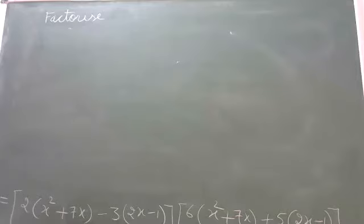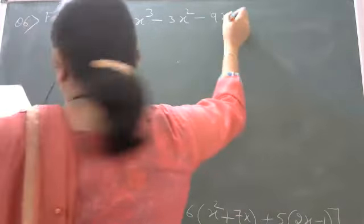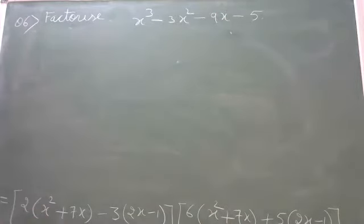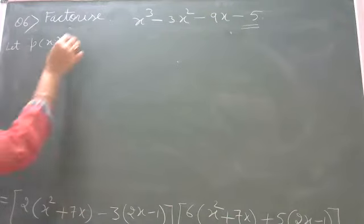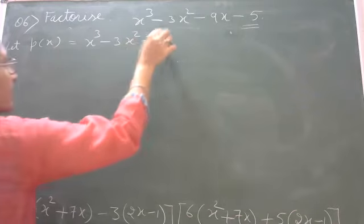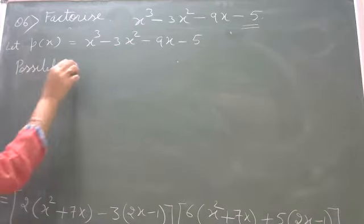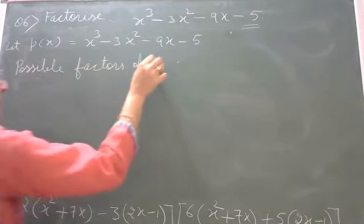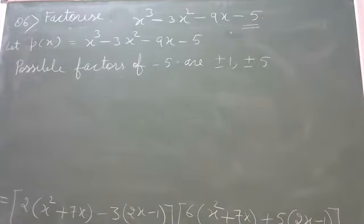If anyone has a problem up to here, you can ask. Next question number 6: factorize x cube minus 3x square minus 9x minus 5. We cannot directly use splitting the middle term here, so we use the factor theorem. The possible factors of the constant term are plus minus 1 and plus minus 5.